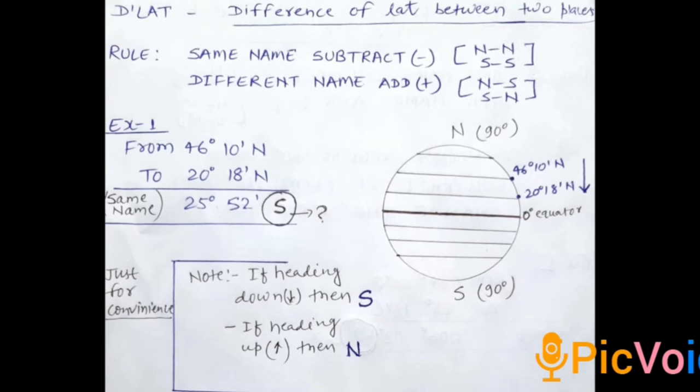But what will be the direction? For knowing the direction, concentrate on the figure, the diagram that I have made. We have North-South, and we are going from 46 degree 10 minute North, so it will be lying somewhere in the North Hemisphere, to 20 degree 18 minute North, which will be lying below 46 degrees.